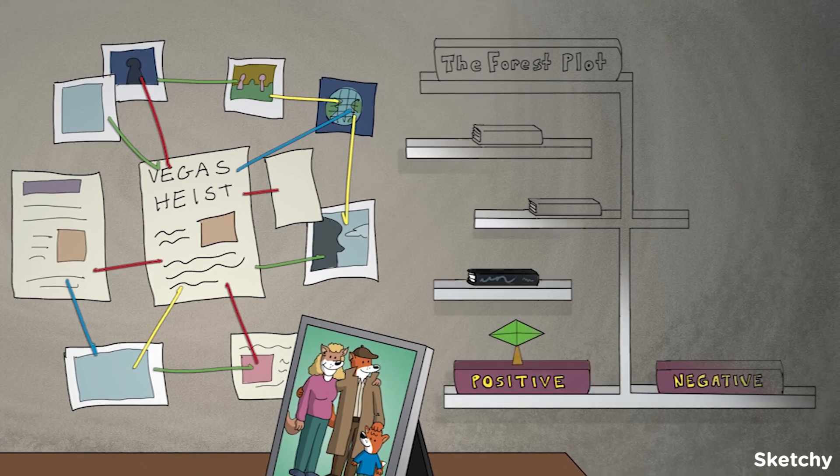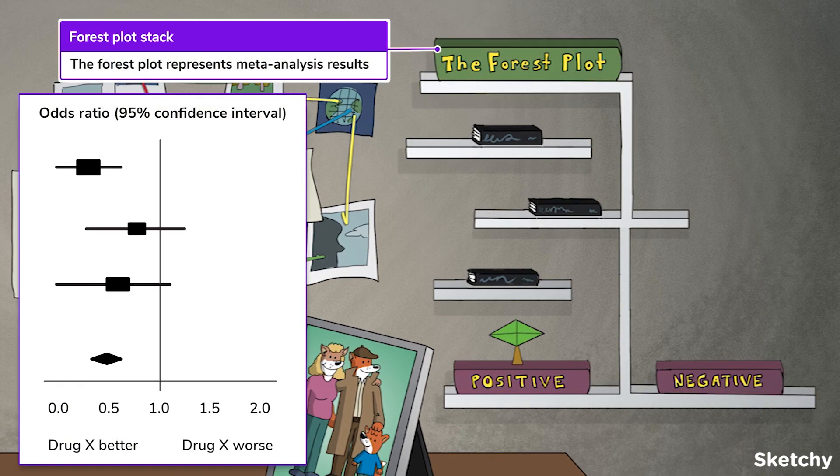The agreement between studies is visually represented with the forest plot, depicted by the stacked bookshelves. Because with the forest plot, you can basically see where your studies stack up, where the study measures diverge, and where they agree.